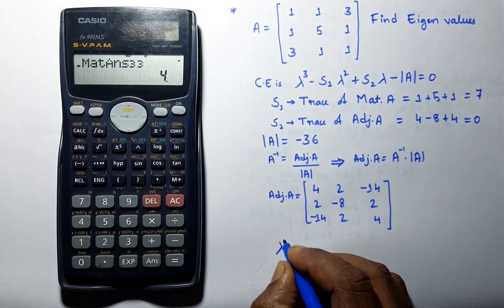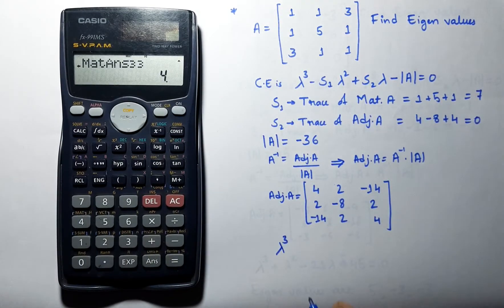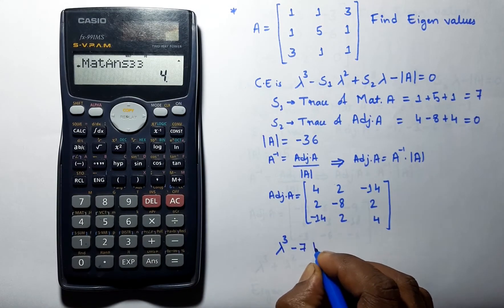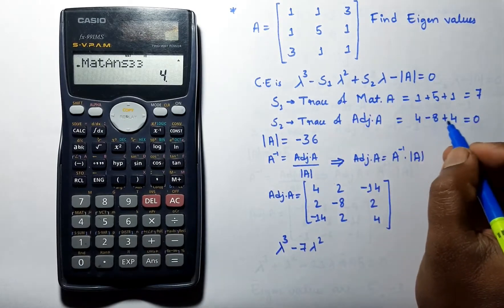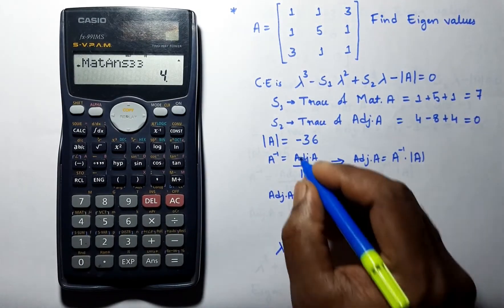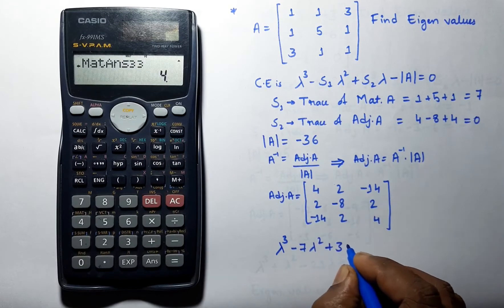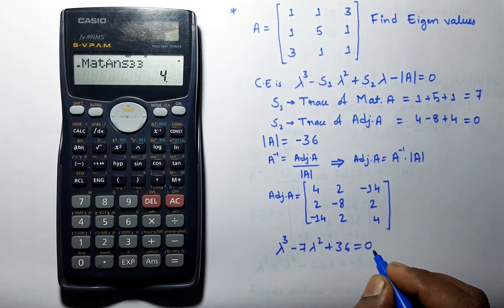We will write out the characteristic equation, which is lambda cube minus 7 lambda square plus S2, which is 0, so we skip that term, plus 36.